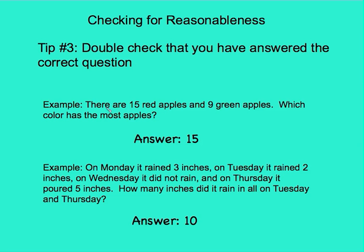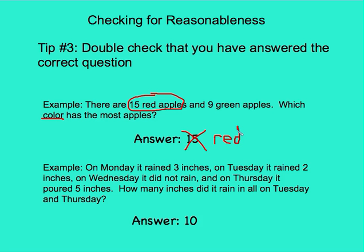Here's an example. There are 15 red apples and 9 green apples. Which color has the most apples? I answered 15. I clearly knew what they wanted — they wanted the one that's greater. However, did I answer the question? The question says which color. I found the maximum, but I gave you the number and not the color. So this is not a reasonable answer. The correct answer should have been red, because that would have answered the question that was asked: which color has the most apples?